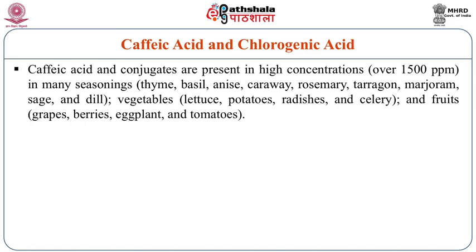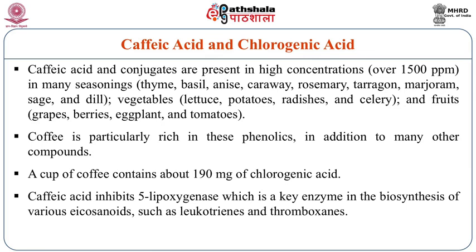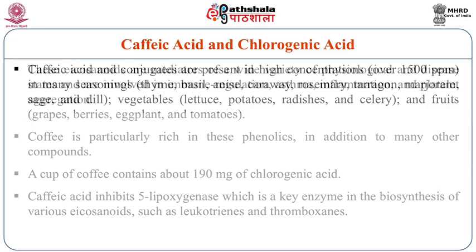Caffeic acid and its conjugates are present in high concentrations — more than 1500 ppm — in many seasonings including thyme, basil, anise, caraway and rosemary. It is also present in vegetables like lettuce, potatoes, radish and celery, and in fruits like grapes, berries, eggplant and tomatoes. Coffee is particularly rich in all these phenolics in addition to many other compounds, and a cup of coffee contains almost 190 mg of chlorogenic acid.